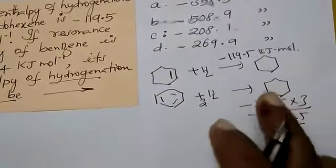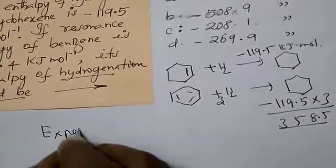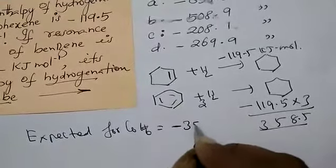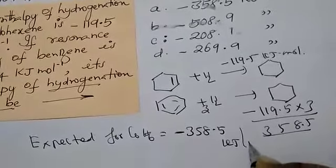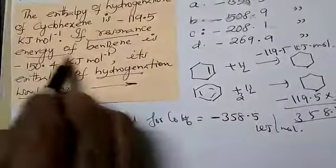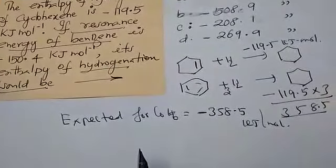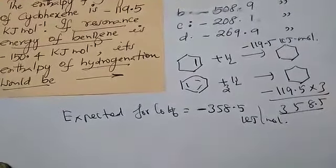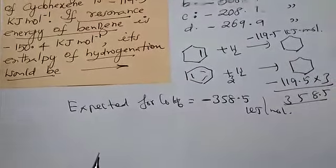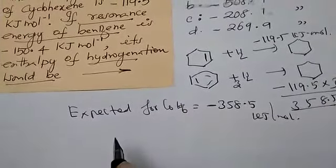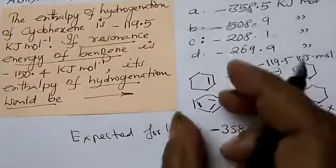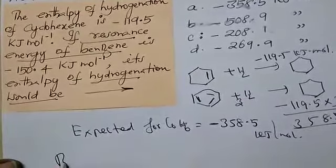This is what we are expecting. For one double bond this amount, for benzene with three double bonds multiply by three. Expected for benzene equals -358.5 kilojoule per mole. What is the next available data? Resonance energy of benzene.